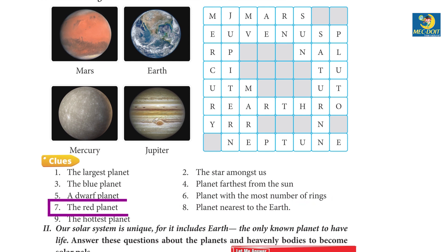7. The red planet - Mars. 8. Planet nearest to the Earth - Mercury. 9. The hottest planet - Venus.